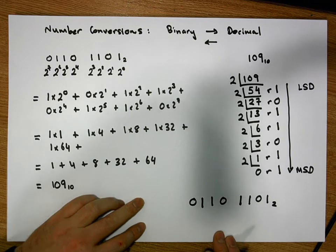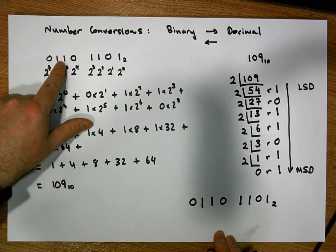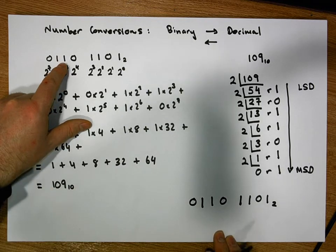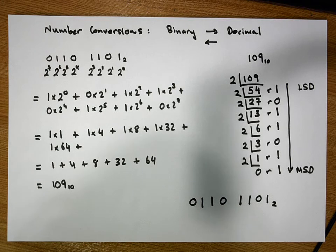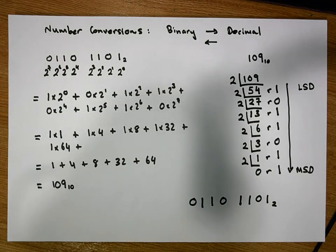So the number 109 in binary is equivalent to 01101101, which is exactly the same number we started with. I hope that was helpful and informative. My name is Jonathan Lambert with the Mathematics Development and Support Service.